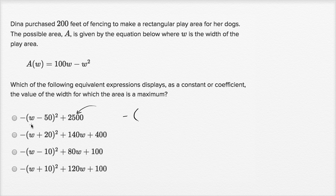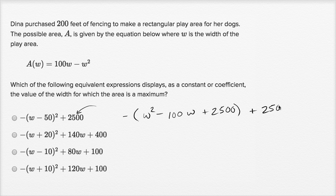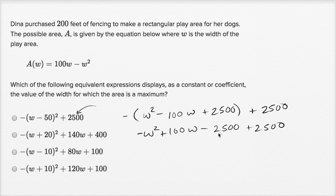This would be the same thing as: negative of W minus 50 squared is W squared minus two times 50 times W, so minus 100W plus 2,500. And then you have plus 2,500 out here. This gives us negative W squared plus 100W minus 2,500 plus 2,500 — these two things cancel each other out, and you're left with negative W squared plus 100W. This would be true for all of these; they're all just algebraic manipulations of the original expression.